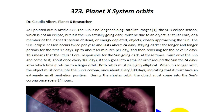The STO eclipse season occurs twice per year and lasts about 24 days, staying darker for longer and longer periods for the first 12 days and up to 69 minutes per day, and then reversing for the next 12 days. This means that the stellar core responsible for the sun going dark must orbit the sun and come to it about once every 180 days, indicating that it must have an extremely small perihelion position.